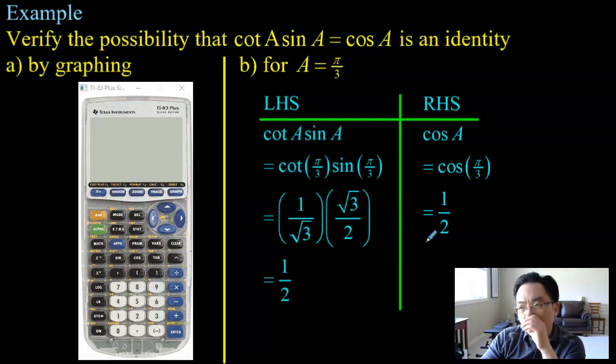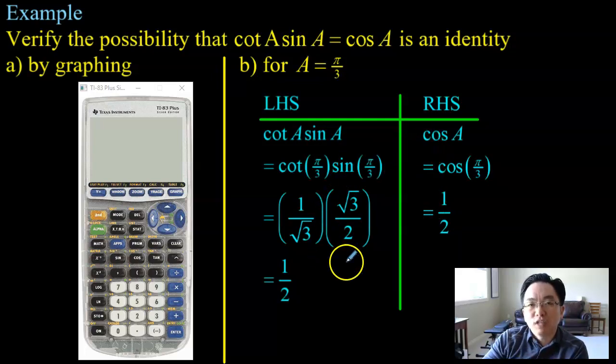So this is not proving anything. This is just showing that this so-called identity actually works for that single value. In order for you to prove it, you would actually have to sub in like every single possible value, pi over six, pi over five, pi over 12, right? Negatives. All of them in there. And that's not possible either. So in a subsequent video, we'll show you how you can prove it once and for all without having to sub in all possible values.